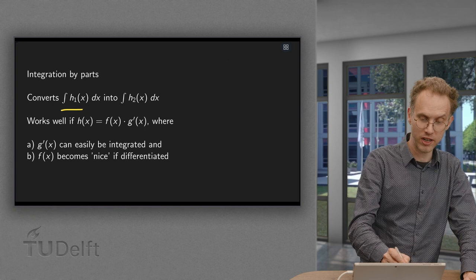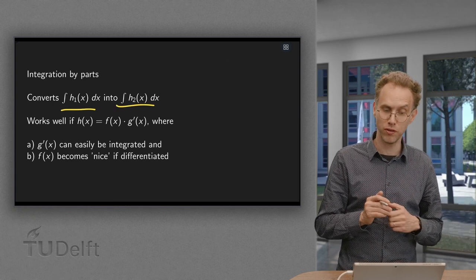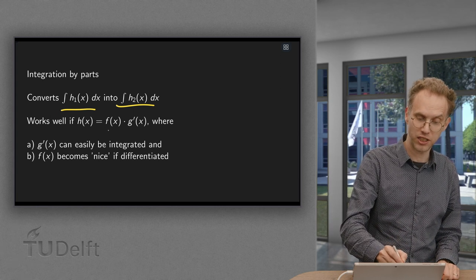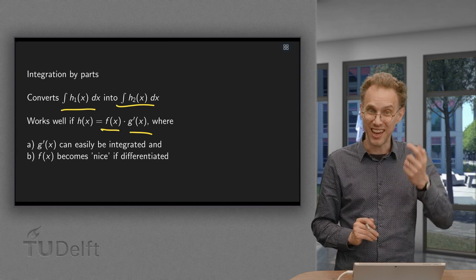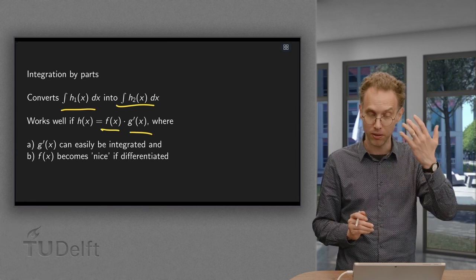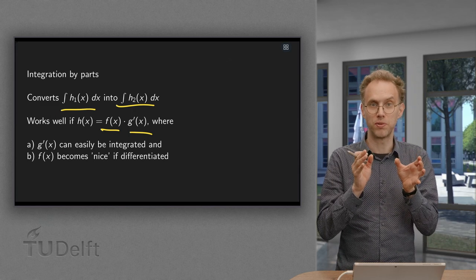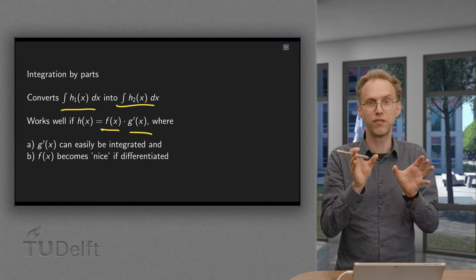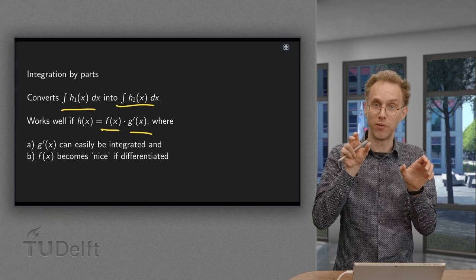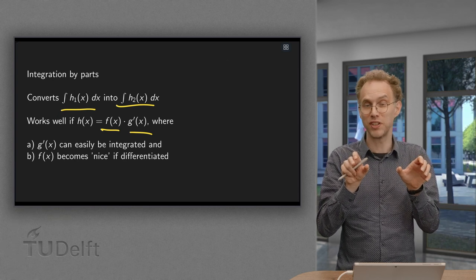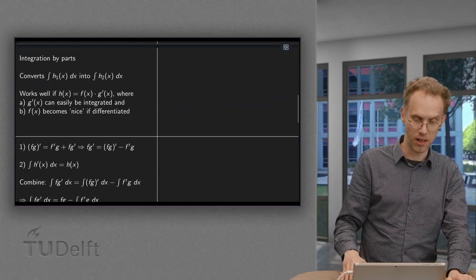We convert one integral into another, and that works well if h is the product of two functions — specifically, h equals f times g prime — where f becomes nice if you differentiate it, and where you can compute the antiderivative of g prime easily. So this procedure works if you have a product of two functions where one part becomes nice if you differentiate and one part can easily be integrated.